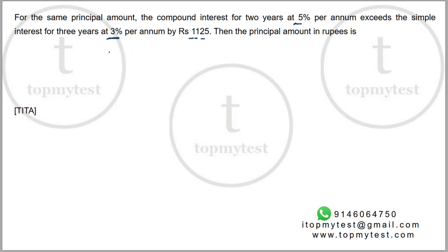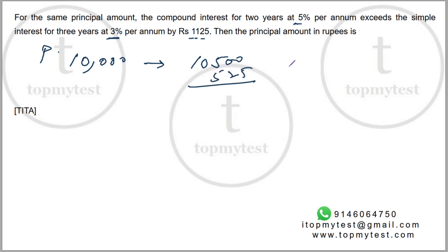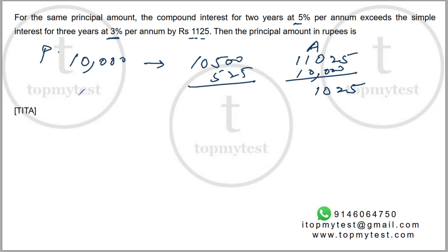You have five percent and two years, so let's take a large enough number — let's take 10,000 rupees as your principal. First year: five percent of 10,000 is 500. Then five percent of 10,500 is 525, giving an amount of 11,025. So your compound interest will be 11,025 minus 10,000, which equals 1,025 rupees.